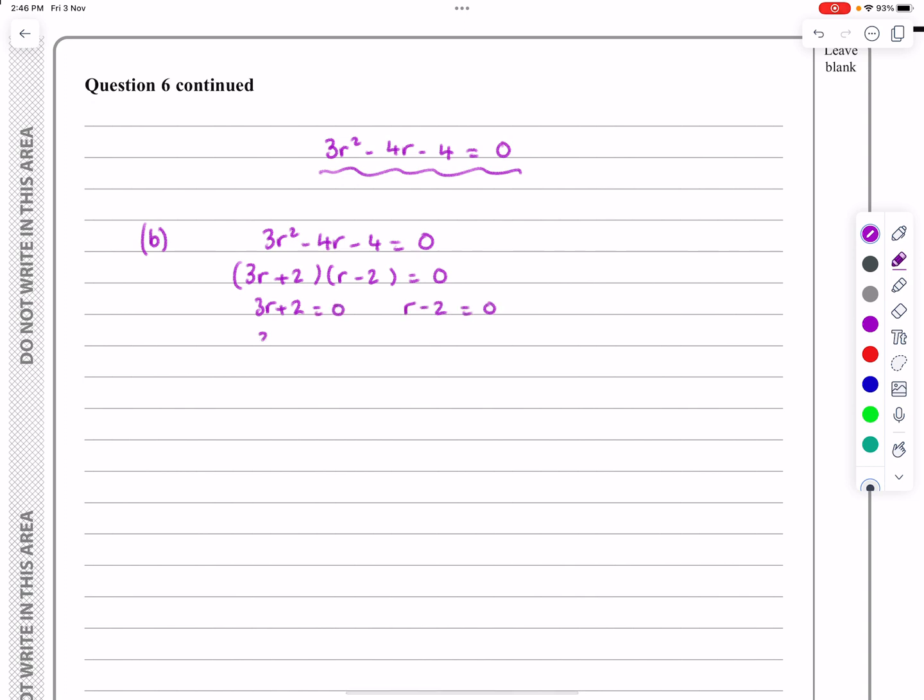So this gives me 3R equals minus 2, R equals minus 2 thirds, and the other one gives me R equals 2. And then this is not valid for a sum to infinity. R has to be, basically the modulus of R has to be less than 1, it has to be a fraction of some sort. So R equals minus 2 thirds is the value I'm now going to use.